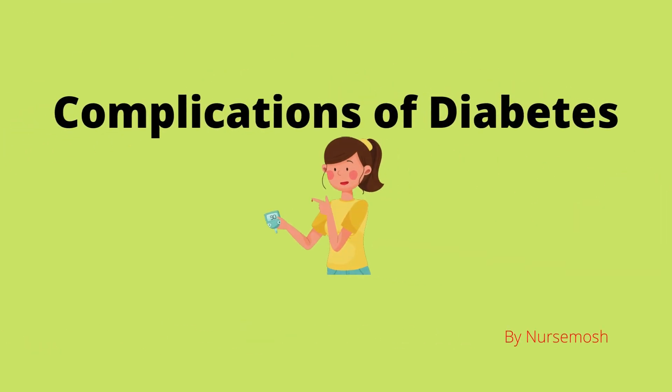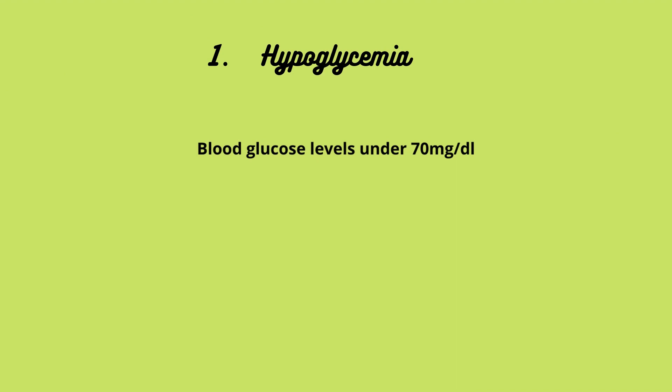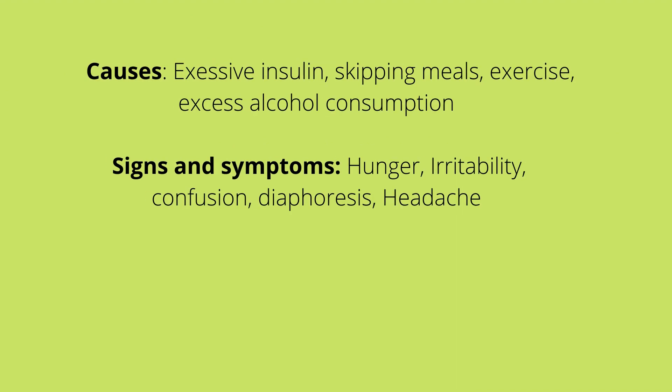In this video we're going to talk about complications of diabetes. Hypoglycemia is when the blood glucose level is under 70 milligrams per deciliter. Causes include excessive insulin, skipping or decreasing food intake, exercise, and excessive alcohol consumption. Signs and symptoms include hunger, irritability, confusion, diaphoresis, headache, shakiness, blurred vision, and pale cool skin.